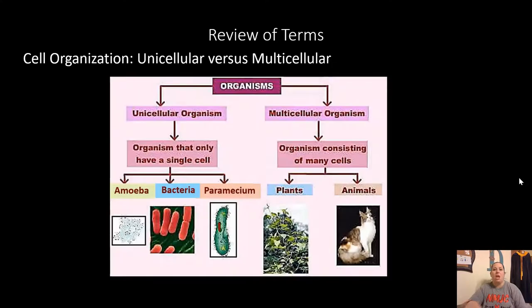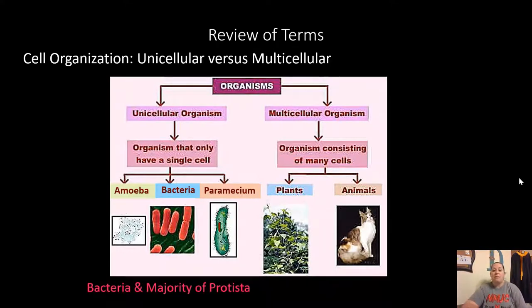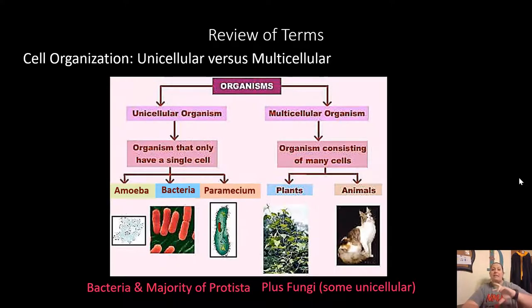Some organisms are unicellular — 'uni' means one, so it's made up of one cell. Others are multicellular, meaning multiple cells make up the organism. Unicellular organisms include things like amoebas, which are part of the protozoa kingdom, bacteria, and paramecium. Multicellular organisms are things like plants and animals. Bacteria and the majority of protista are unicellular. Fungi, though, has a divide — some fungi are unicellular and some are multicellular.